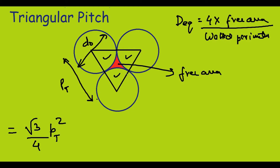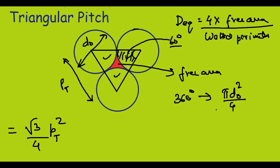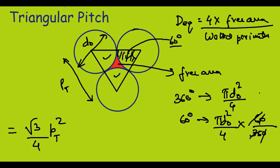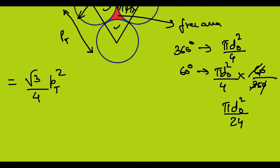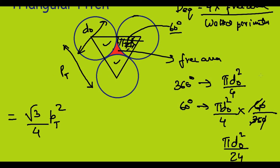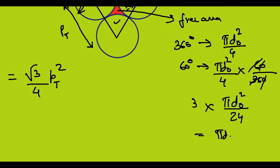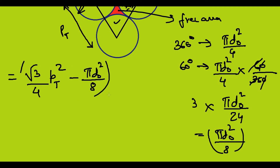Since this is an equilateral triangle, each angle is 60 degrees. To find the area of each circular sector at the corners, for a full 360 degrees the circle area is πDO²/4, so for 60 degrees it is πDO²/4 × (60/360) = πDO²/24. I have 3 of these pieces, so multiplying by 3 gives πDO²/8. The free area is therefore (√3/4)Pt² − πDO²/8.